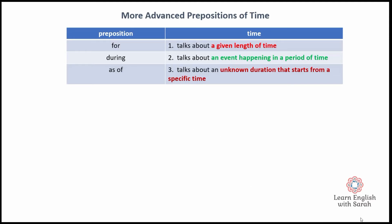Moving on to some more advanced prepositions of time. I have quite a few high-level students who really get confused between 'for' and 'during', so I thought we would talk about those today. I've also added the phrase 'as of'. 'For' talks about a given length of time — a time with a very clear start and finish. We use 'during' to talk about an event happening in a period of time. And 'as of' talks about an unknown duration that starts from a specific time.